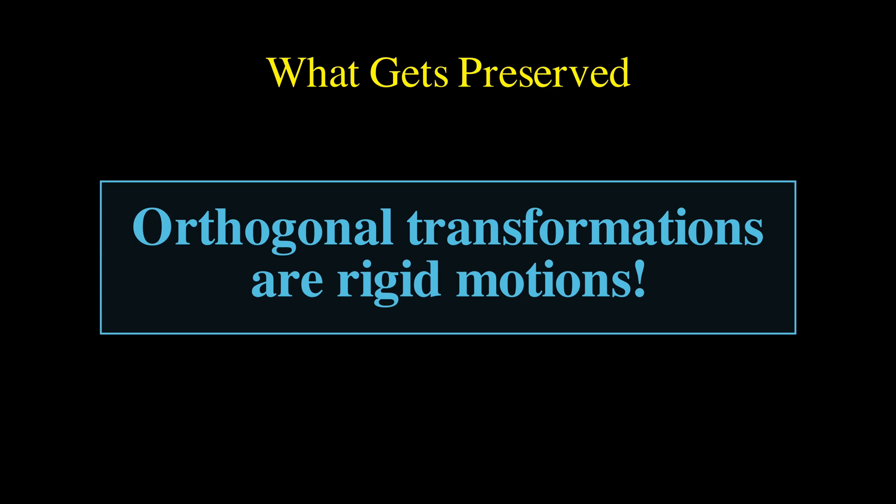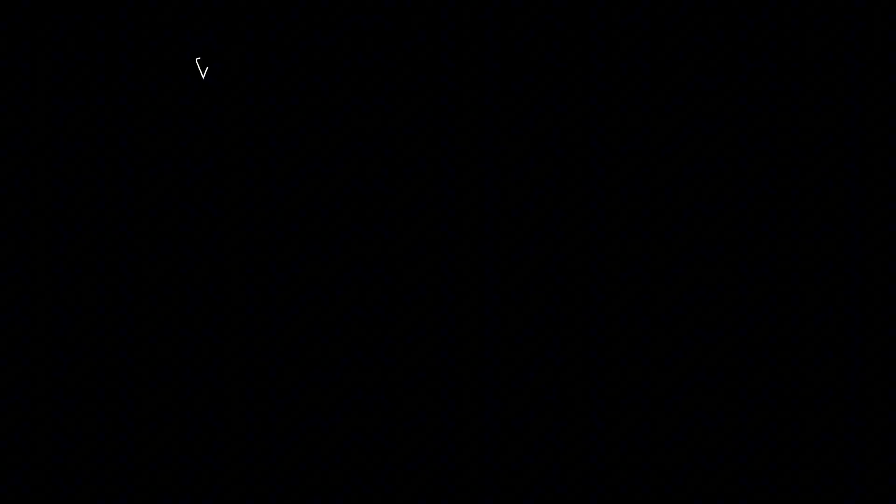They can spin things around and flip them over, but they can't stretch, squeeze, or distort. This geometric interpretation will help us understand why machine learning loves these matrices.